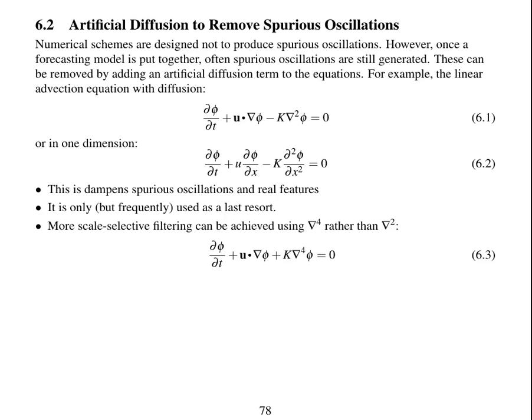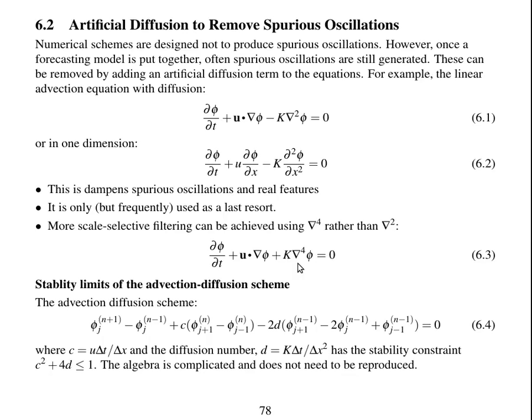Another thing that's frequently used is hyperdiffusion, which is del-4 diffusion rather than del-squared. This is more scale selective, which means it removes the small-scale oscillations much more than it removes the large-scale oscillations. So, for example, here's the advection equation with a hyperdiffusion term.